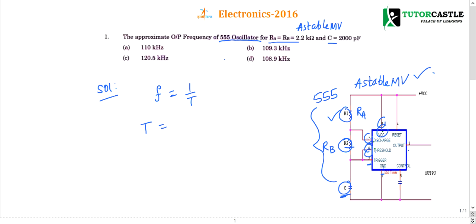So time period of oscillation of 555 timer when it is acting as an astable multivibrator is given by 0.693 into (Ra plus 2 times Rb) into C. So on substituting the given information, 0.693 into Ra is 2.2 plus 2 times 2.2 multiplied with the capacitor.